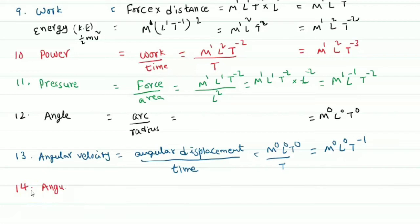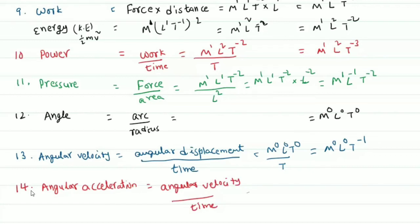The next is angular acceleration. The rate of change of angular velocity is called angular acceleration. Angular acceleration equals angular velocity divided by time. Angular velocity has dimensions M power 0, L power 0, T power minus 1, divided by T, giving M power 0, L power 0, T power minus 2.